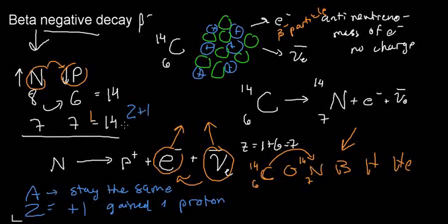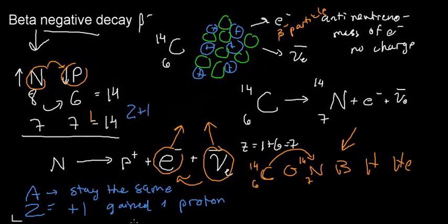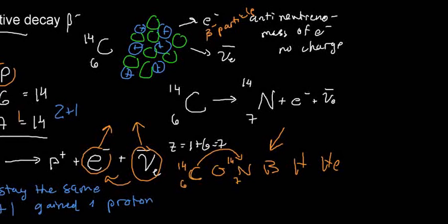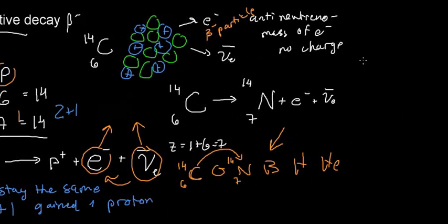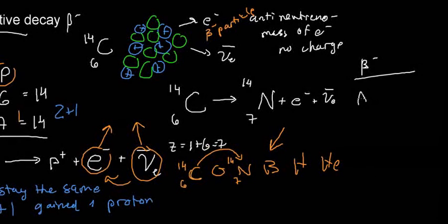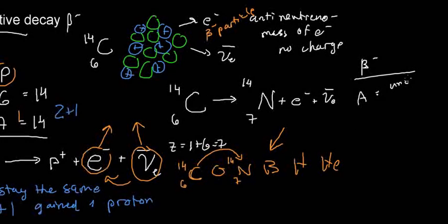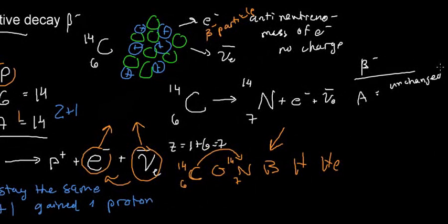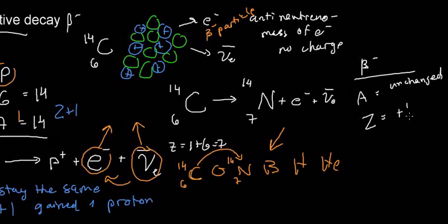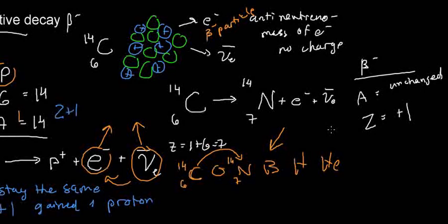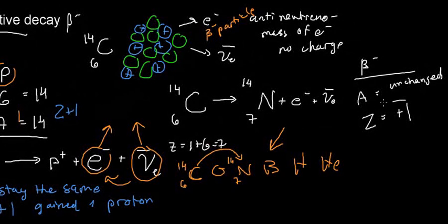For beta negative decay: the mass number A stays unchanged, and Z increases by plus one. Just as with alpha decay, the element changes — it becomes a different substance.